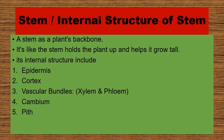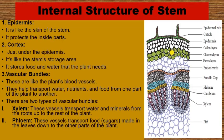A stem is a plant's backbone. The stem holds the plant up and helps it grow tall. Its internal structure includes: 1. Epidermis — it is like the skin of the stem and it protects the inside parts. You can see the T/S section of the stem and its parts in detail.